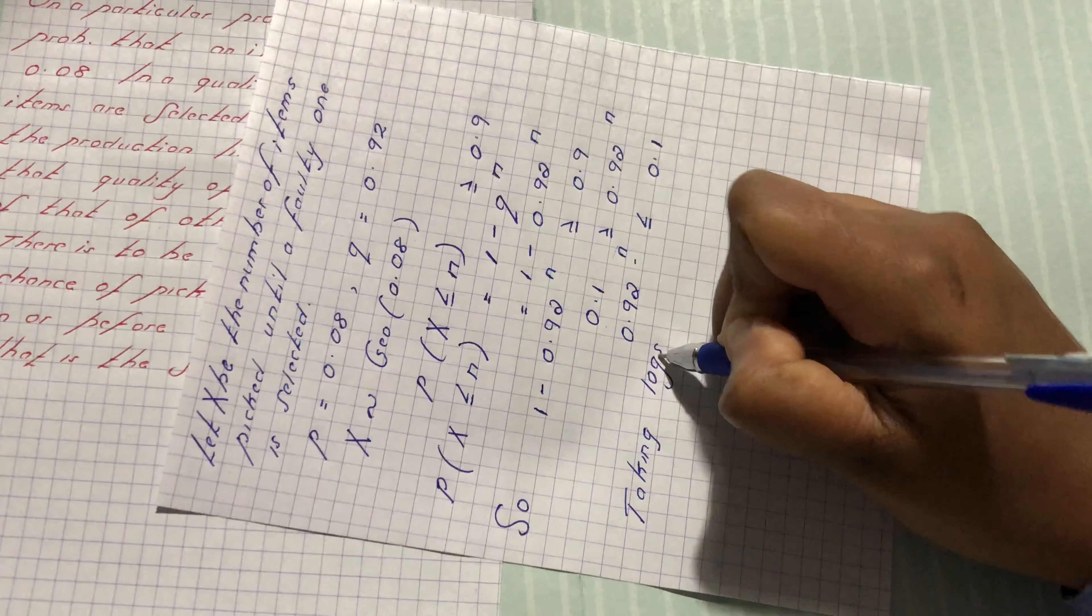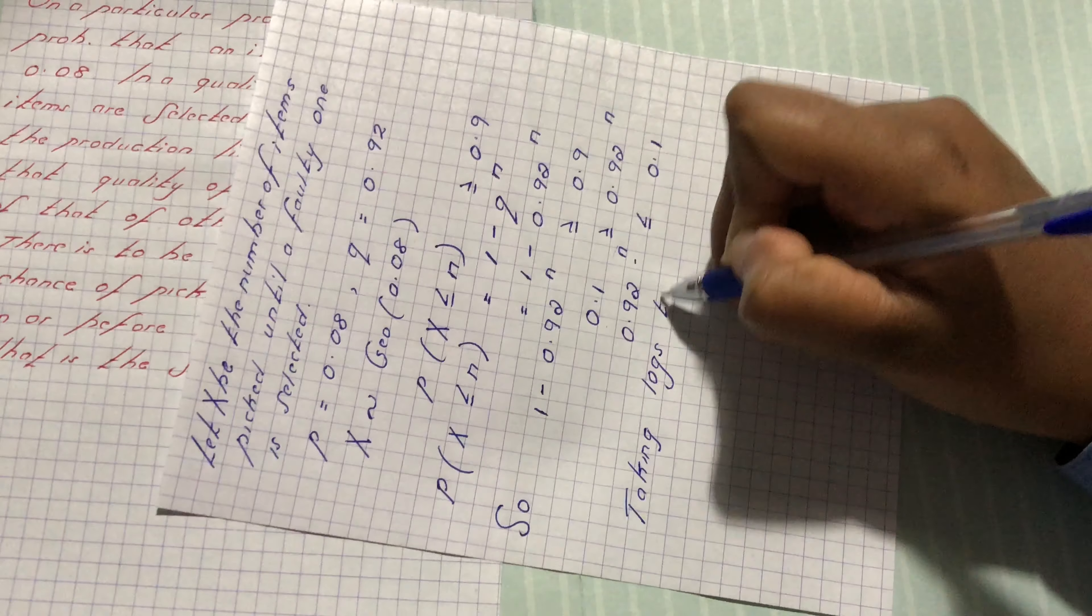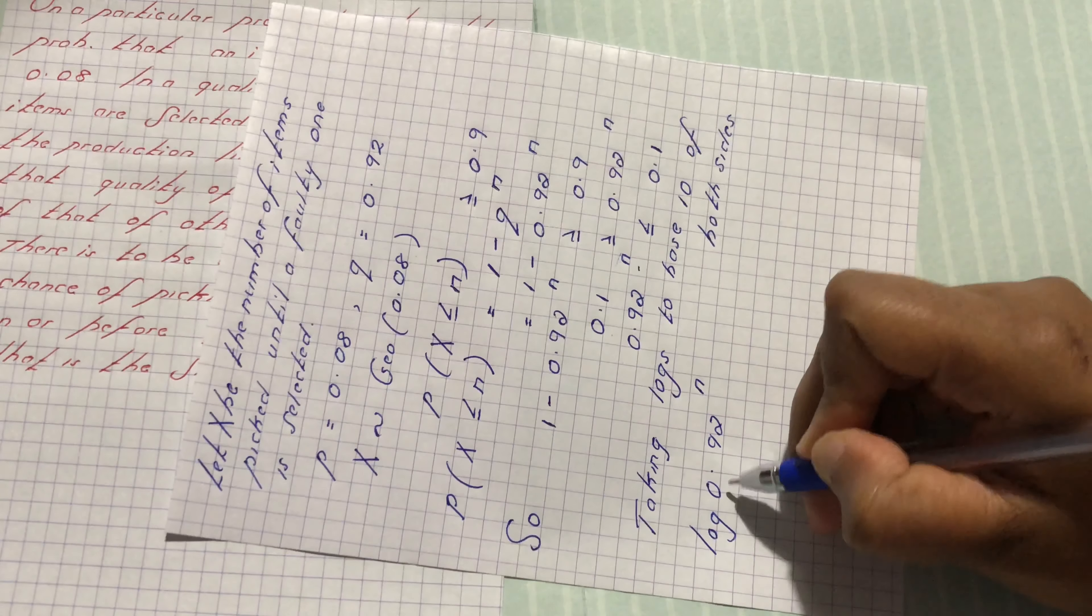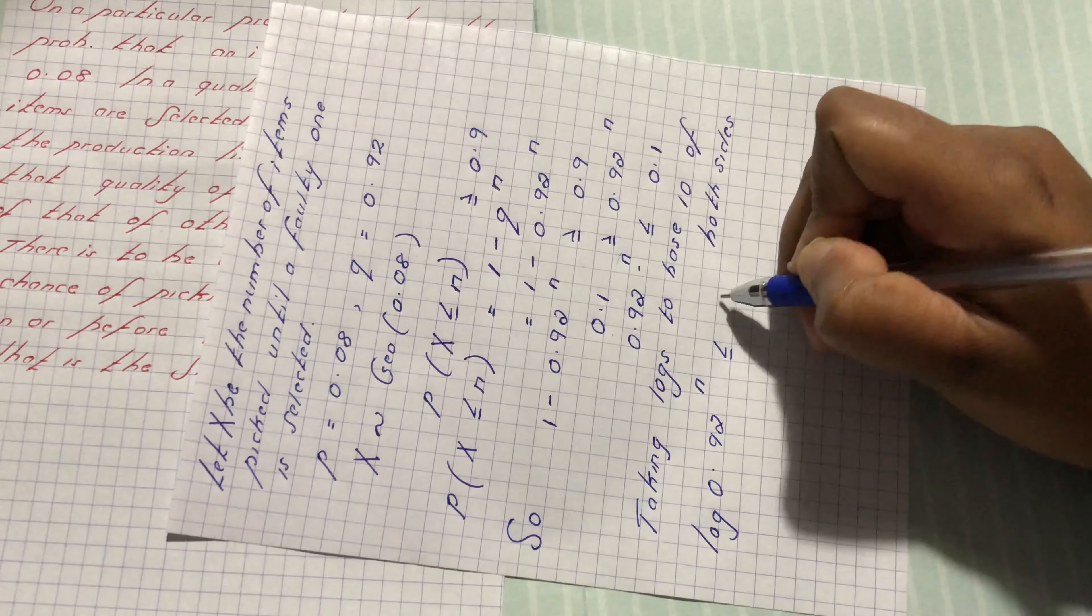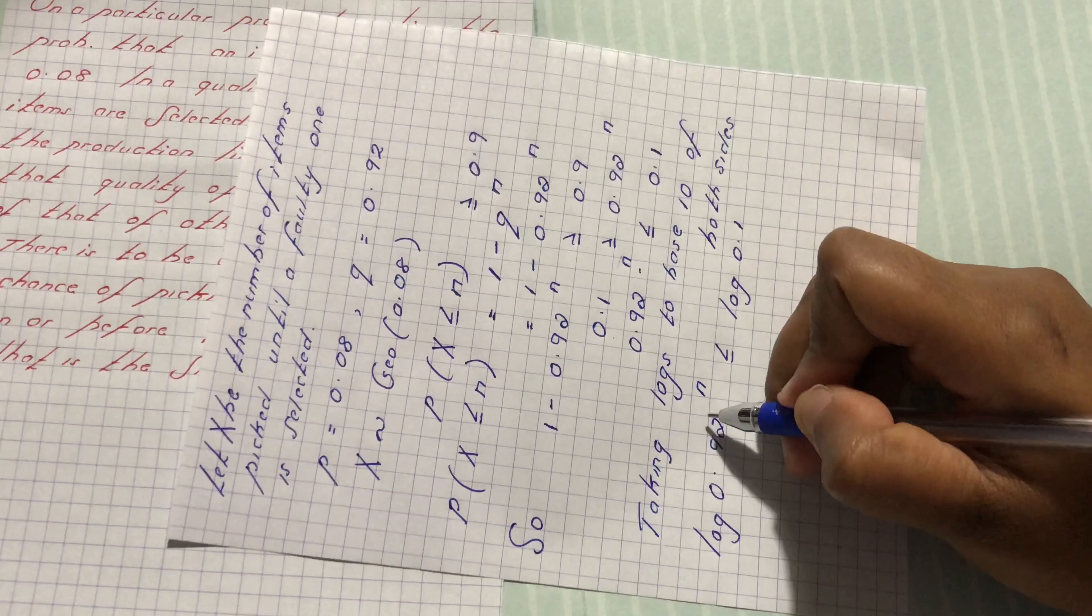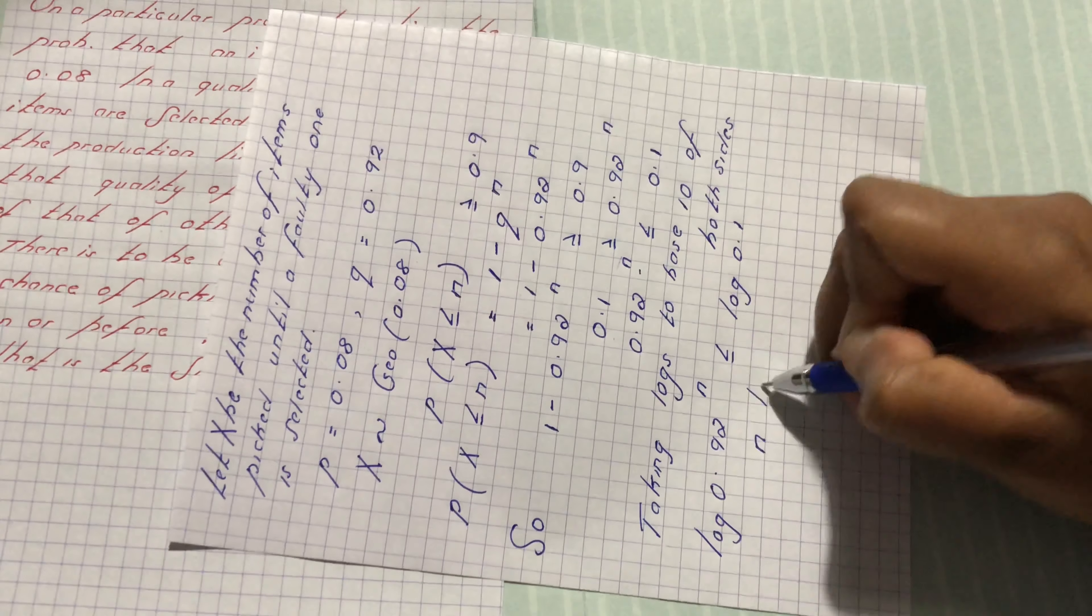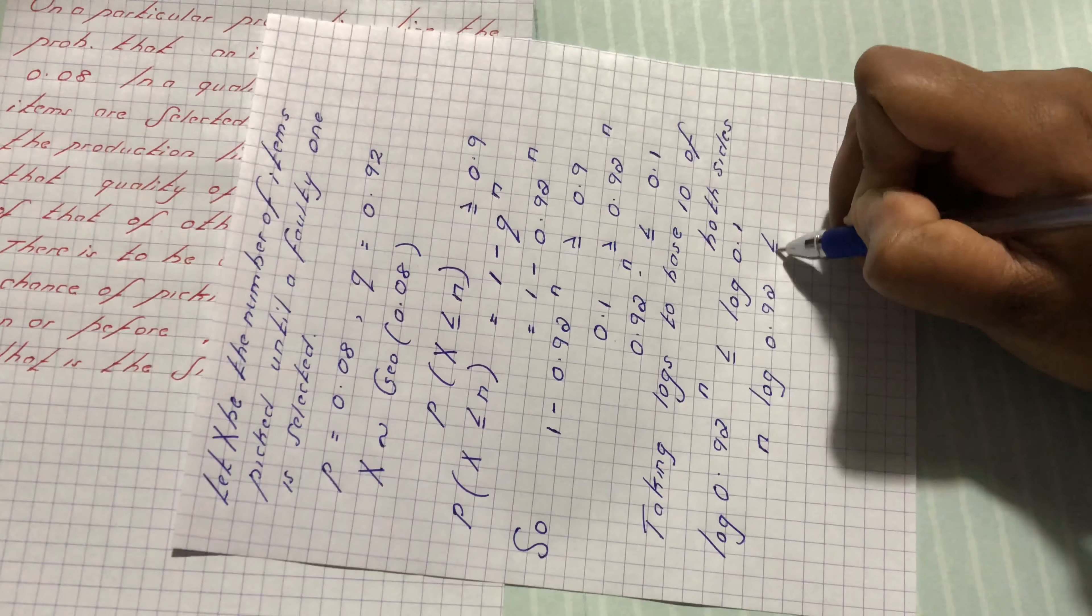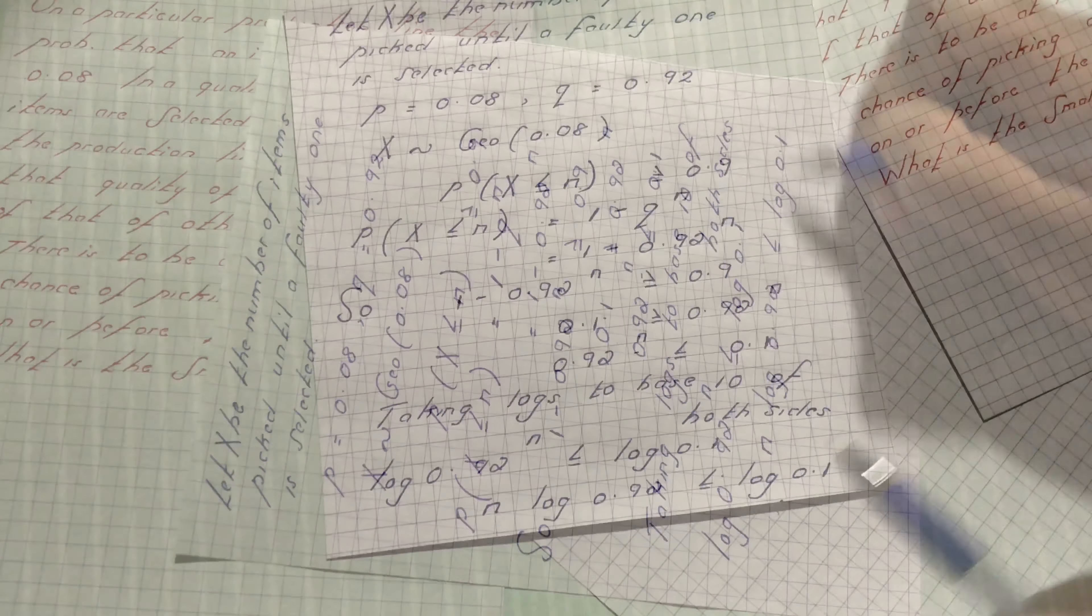So taking log to base 10 we have log of 0.92 power n less or equal to log of 0.1. As per law of log, n log of 0.92 less or equal to log of 0.1.